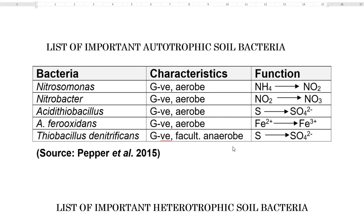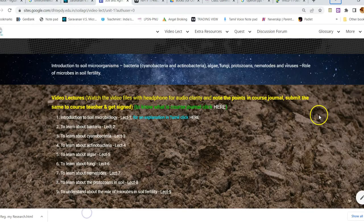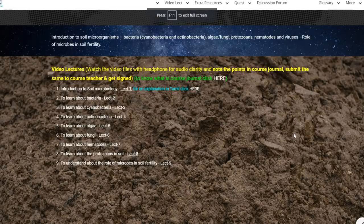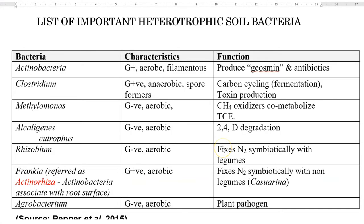Apart from this group of autotrophic bacteria, cyanobacteria is also one of the important autotrophic bacteria present mainly in the marshlands. However, we are going to look at cyanobacteria-related points separately in lecture 3. Next, we look at the important group of heterotrophic soil bacteria — those that feed on already available carbon sources in the soil system.